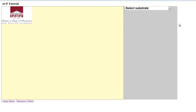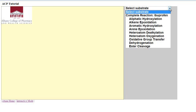You'll notice as soon as we launch the tutorial mode, in the gray box on the right, you see a menu to select a substrate. Clicking on that, we have a dropdown menu for various substrates that are catalyzed by cytochrome P450.